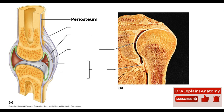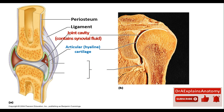This right here is the periosteum, which surrounds the bone. This is the ligament. All synovial joints are surrounded by ligaments to support the joint structure. This right here is the joint cavity, which has the synovial fluid in it. This right here is the articular hyaline cartilage, which covers the end of long bones to prevent the erosion of the bone.